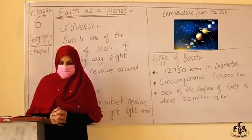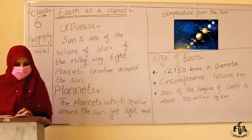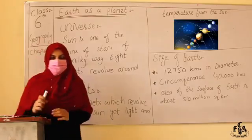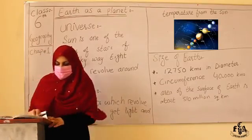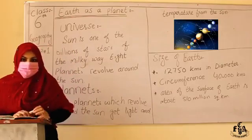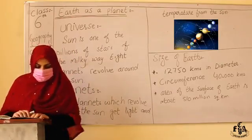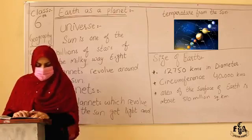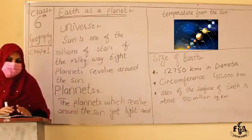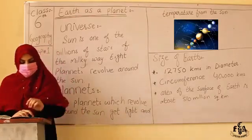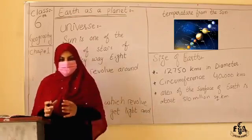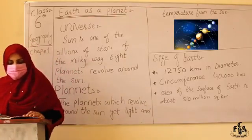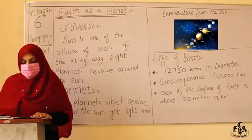Eight planets revolve around the Sun — this is called our solar system. The planets which revolve around the Sun get light and temperature from it. Our eight planets are Mercury, Venus, Earth, Mars, Jupiter, Saturn, Uranus, and Neptune. Earth is one of the planets of the solar system, revolving around the Sun in its respective orbit.